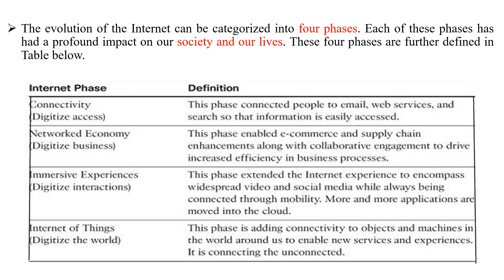The evolution of the internet can be categorized into four phases, each having a profound impact on society and our lives. These phases are defined in a table. Phase 1 — connectivity — digitized access, connecting people to email, web services, and search so that information is easily accessed. Phase 2 — network economy — digitized business, enabling e-commerce and supply chain enhancement along with collaborative engagement to drive increased efficiency in business processes.